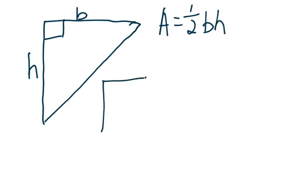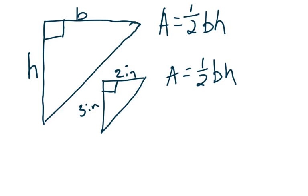I'm going to draw another one. We're going to call the height three inches and the base two inches. I'm going to always start with my formula: one half times the base times the height. And remember, we talked about multiplying by one half is the same as dividing by two. So area is equal to 0.5 times three times two. Does it matter what order I'm multiplying? No, it doesn't — because of commutative property of multiplication. So area equals one half times three is 1.5, times two — and don't forget, you should be using a calculator — my area is equal to three inches squared.